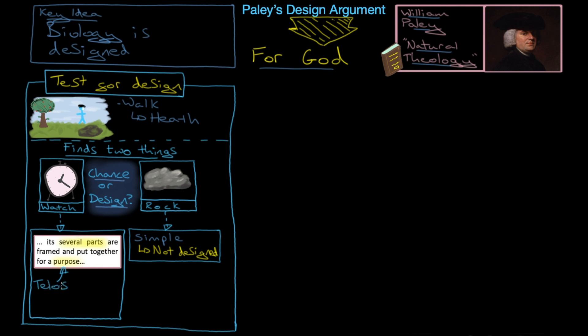They have a telos. What is the telos of the watch? Well, the telos of the watch, of course, is to tell time. And he says, even if I'd come across the watch and I'd never seen a watch before, I would still be able to think that it has a purpose, because I can look at it and see that it moves regularly.